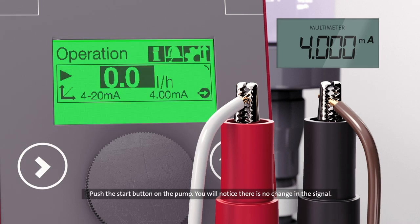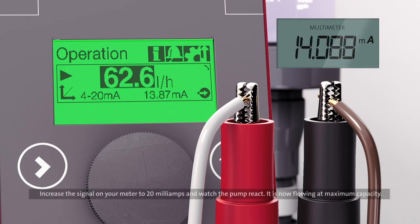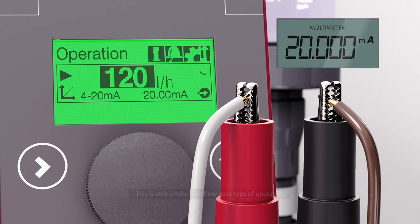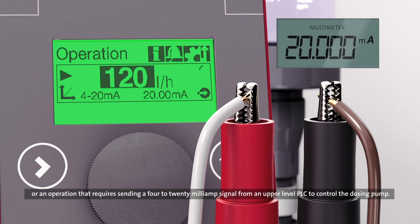Push the start button on the pump. You will notice there is no change in the signal. Increase the signal on your meter to 20 milliamps and watch the pump react. It is now flowing at maximum capacity. This is very similar to a flow paste type of operation, or an operation that requires sending a 4 to 20 milliamp signal from an upper level PLC to control the dosing pump.